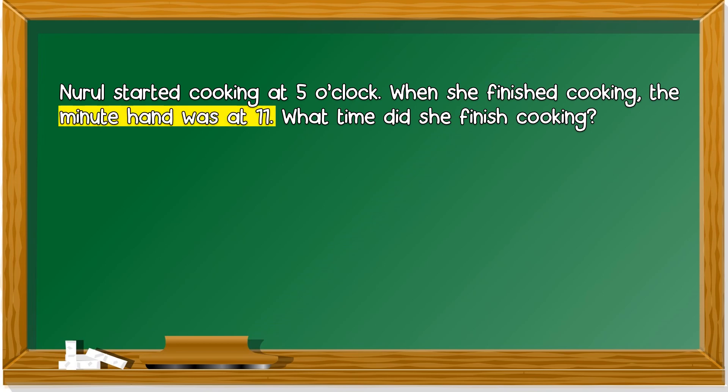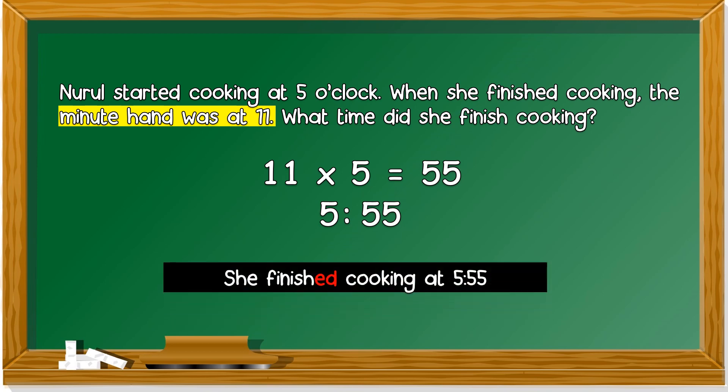The minute hand now is at 11. 11 times 5 is 55. 55 minutes after 5 o'clock is 5:55. She finished cooking at 5:55.